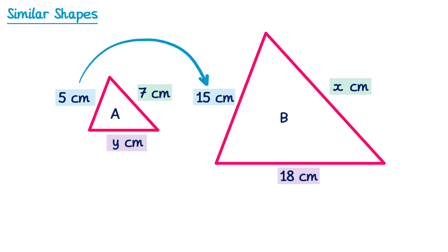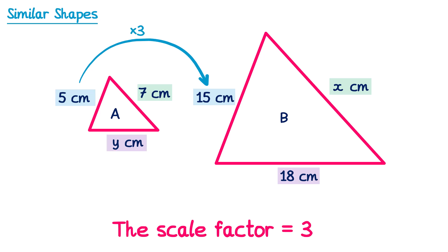We can work out what we multiply 5 by to get to 15 to find the scale factor. 5 multiplied by 3 is 15, so the scale factor must be 3. This means we need to multiply all of the sides on A by 3 to get the sides on B. So we multiply 7 by 3 to work out X: 7 multiplied by 3 is 21, so X is 21.